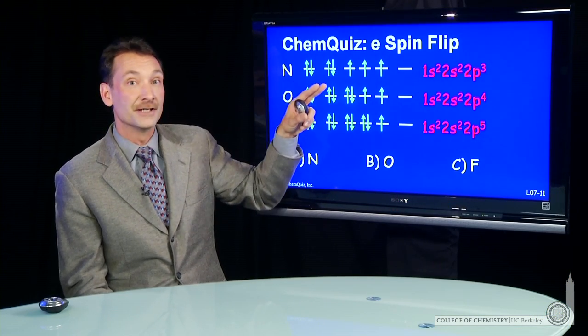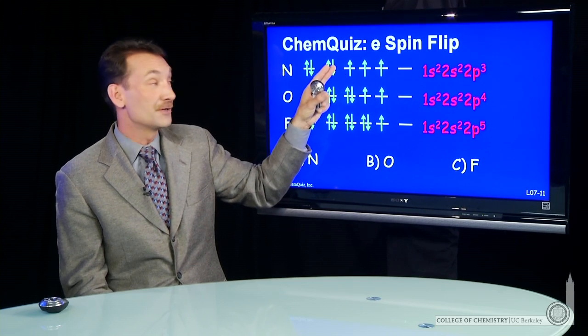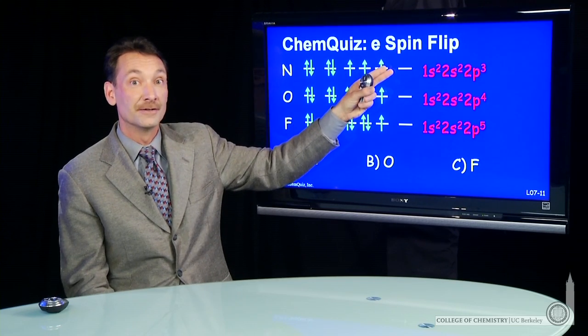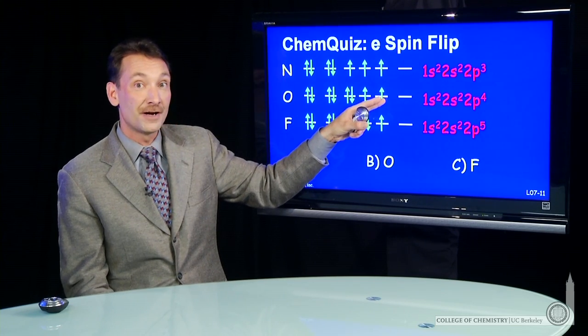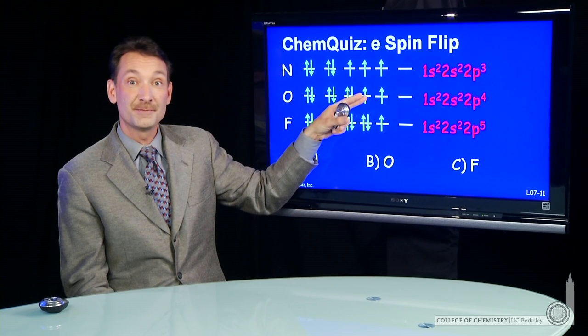In oxygen and nitrogen, there's other electrons. So these electrons will try to be parallel. So the energy of this electron depends on the spin of this electron.